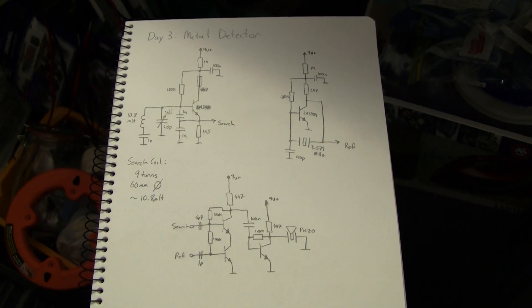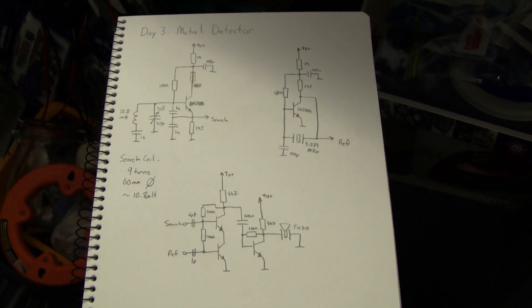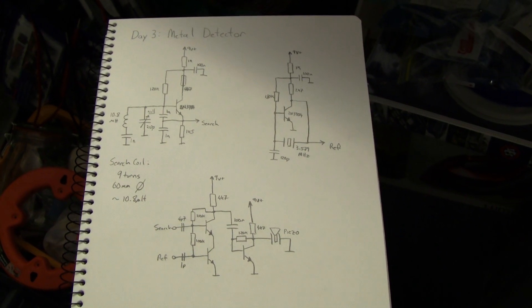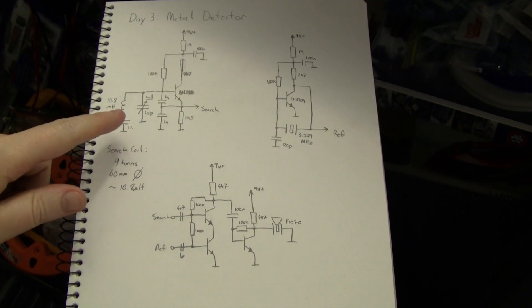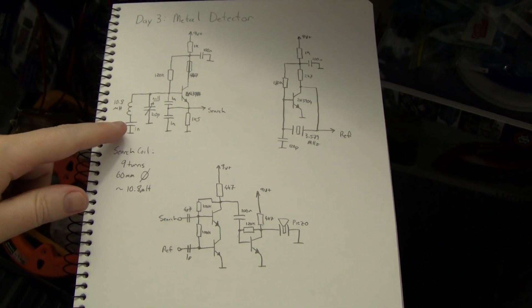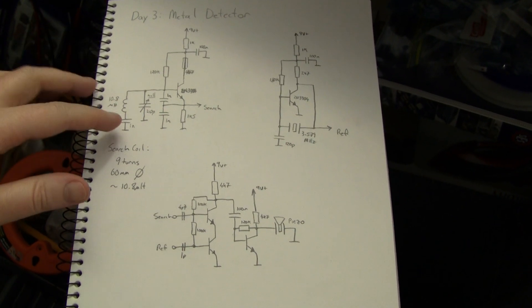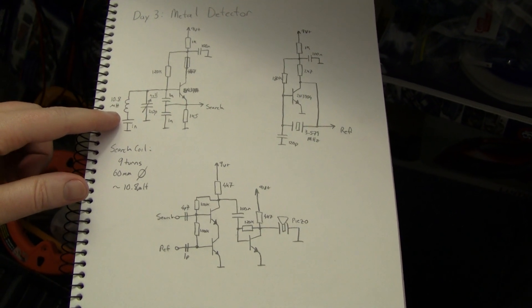G'day everyone, this is day three. Today we've got a metal detector. It's a simple heterodyne metal detector. It has a search oscillator, which is a Colpitts oscillator, with about a 10 microhenry coil for searching for metal.